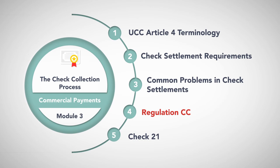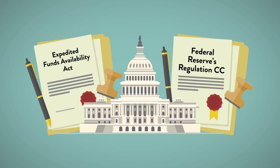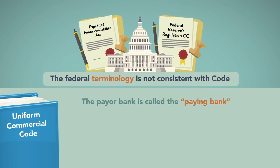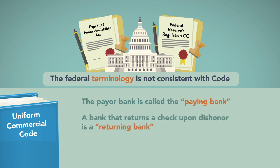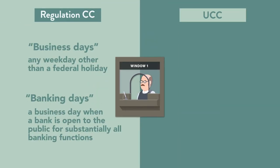Regulation CC. In addition to state law, Congress has passed federal legislation that governs certain UCC topics — specifically the Expedited Funds Availability Act and the Federal Reserve's Regulation CC. While its aim is to clarify some of the code's provisions, it sometimes adds complexity and uncertainty. For instance, the federal terminology is not consistent with the code: the payer bank is called the 'paying bank,' any bank that returns a check upon dishonor is a 'returning bank,' but that term only applies to intermediary banks, not to paying or depository banks that return checks. The federal rules also define 'business days' and 'banking days': a business day is any weekday other than a federal holiday, while a banking day is a business day when a bank is open to the public for substantially all banking functions.